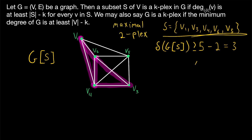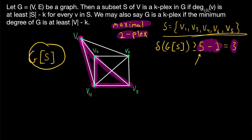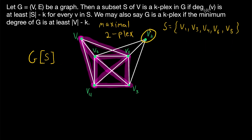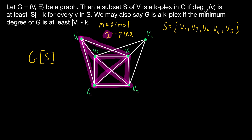The maximal 2-plex is a subset of the vertex set of g containing 5 vertices such that in the subgraph induced by the vertex set, every vertex has a degree of at least 5 minus 2, which is 3. It is a maximal 2-plex because we can't extend it by including any other vertex. Note that if we try to include v2, our vertex set would have 6 vertices, so to be a 2-plex every vertex would need a degree of at least 6 minus 2, which is 4 — and that's certainly not true because v2 is only adjacent to 3 vertices. In a 2-plex, every vertex is allowed to not be adjacent to at most two vertices. Our vertex v3, for example, is not adjacent to v3 and not adjacent to v1, but it is adjacent to every other vertex in the 2-plex.